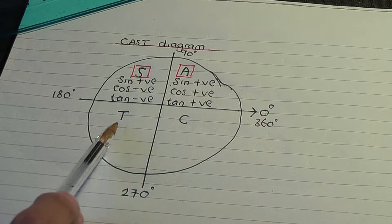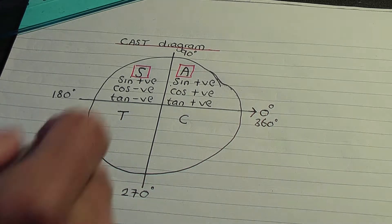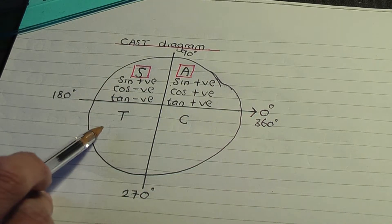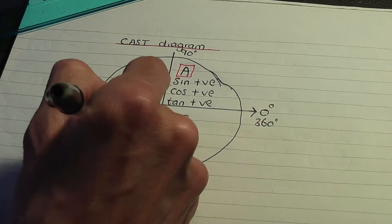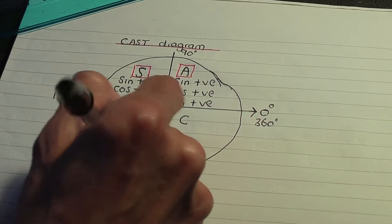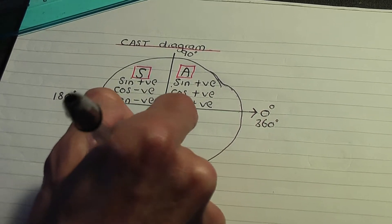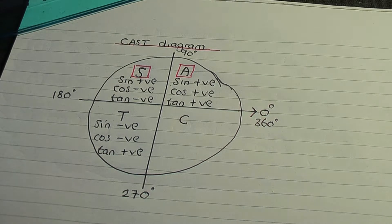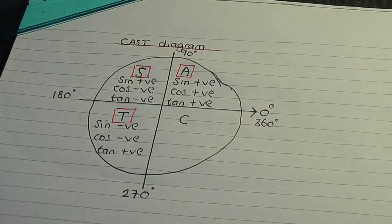Going to the third quadrant, we label that T — and you may have guessed it — we label it T because only tan is positive, and the remaining two ratios, sine and cos, are both negative. So only tan is positive, and let me make it more clear by encapsulating that T in red.